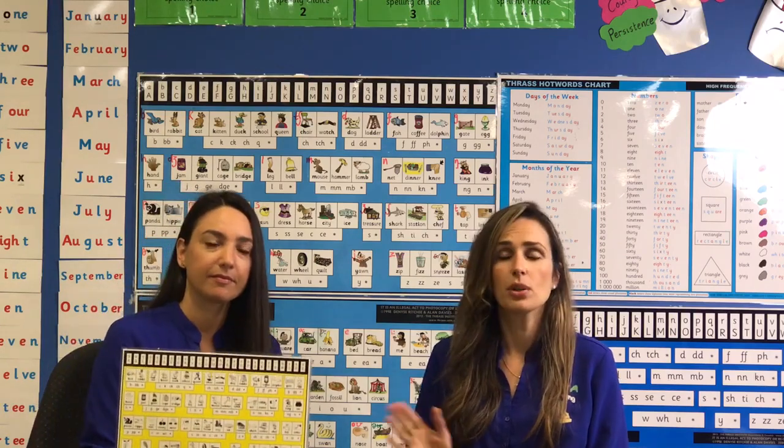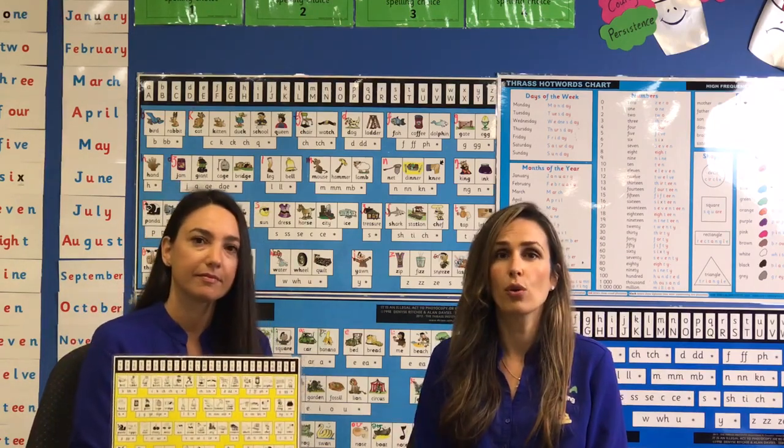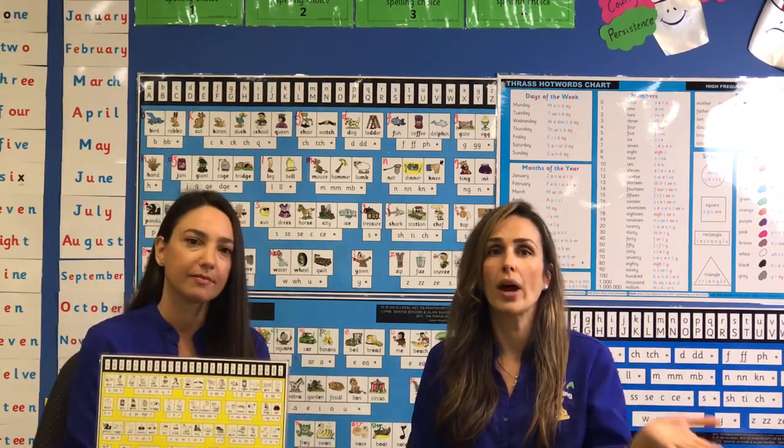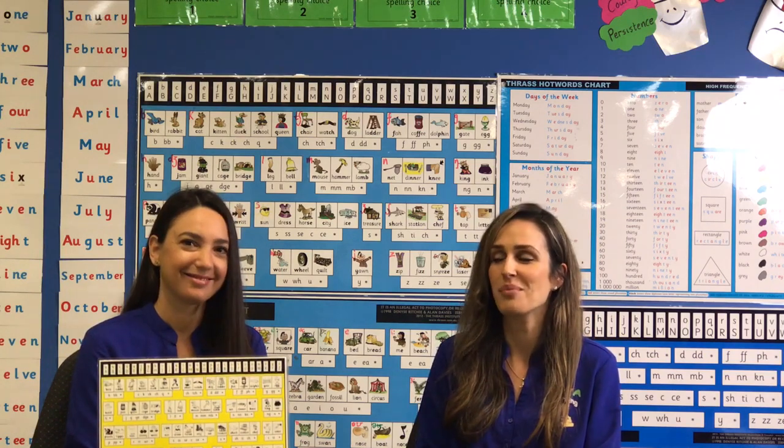We can't stress the importance of the Thrass chart in terms of understanding our English language and the 44 phonemes of our English language. This can be used for your preschool children all the way up throughout their high school. Basically it's a periodic table for our English language, so if you don't have one, go and get one. Very important.